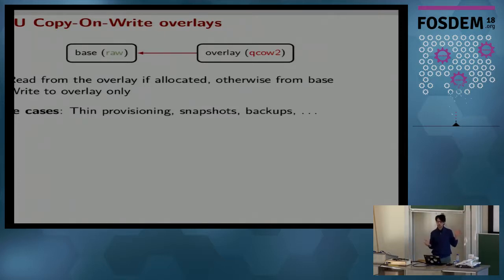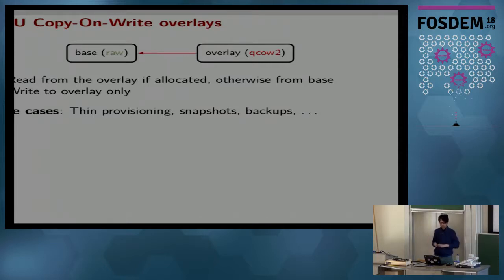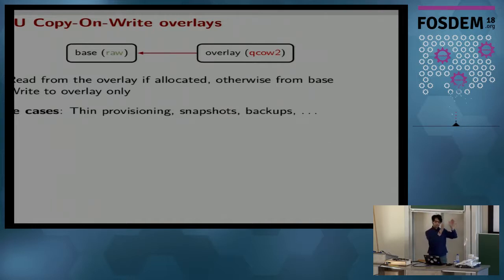QEMU's copy-on-write overlays, as most would know, offer a way to refer to a base image — say, a Fedora operating system — and then you can create an overlay based on that base image. This overlay refers back to the base image, and you can do all kinds of destructive things in this overlay, then if you screw up something, you can discard it and go back to the base image. The base image can be of any format, but overlays are always QCOW2. When I say overlay, it is always the image created based on the first image in a disk image backing chain.